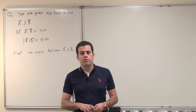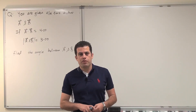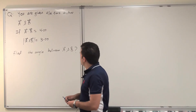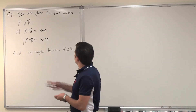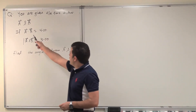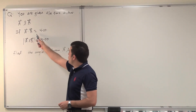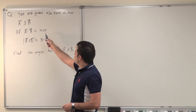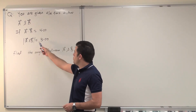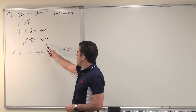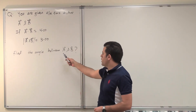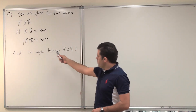As-salamu alaykum. Today we're solving questions from chapter 3. The question reads: you are given two vectors A and B. If A dot B equals 4 and the magnitude of A cross B is 3, find the angle between A and B.